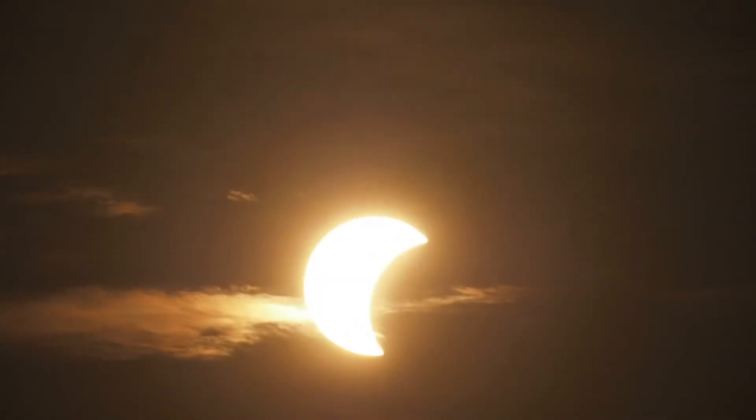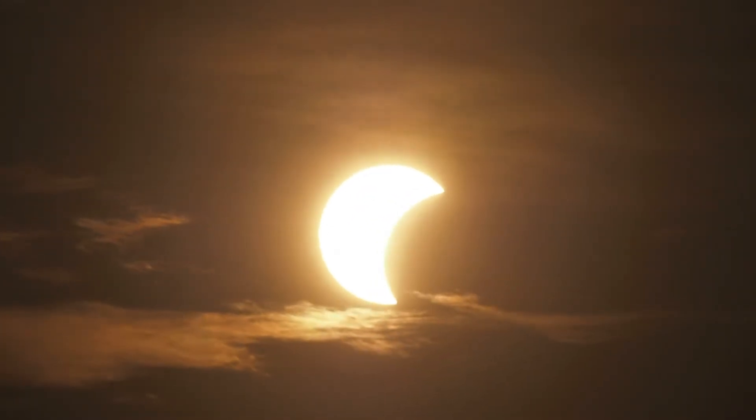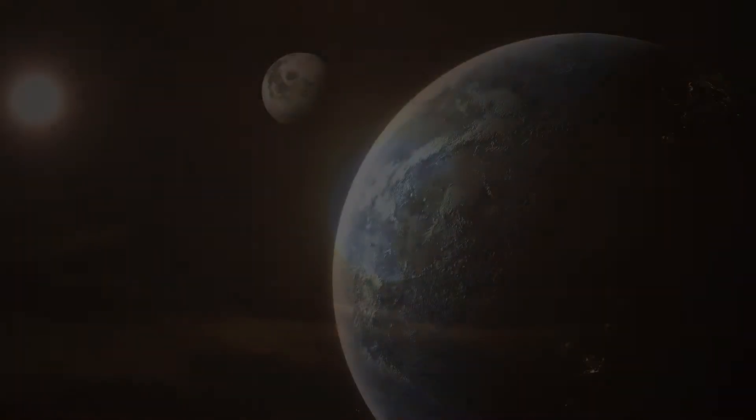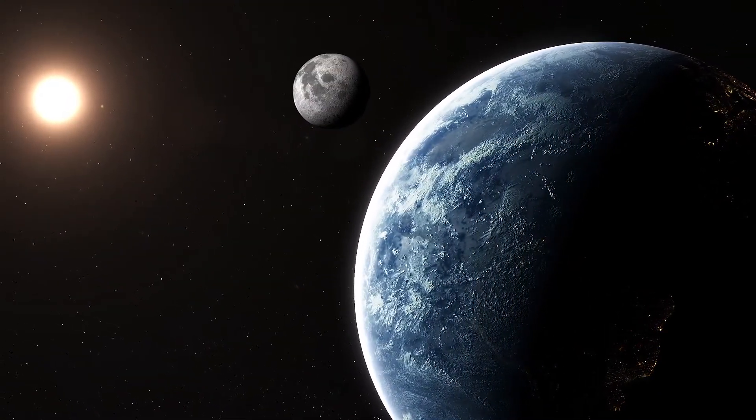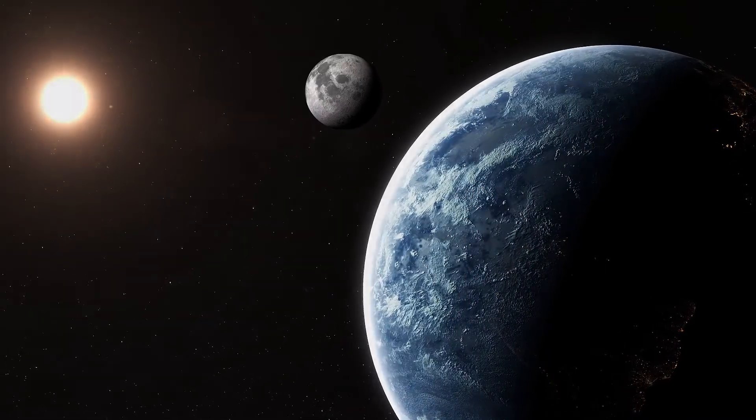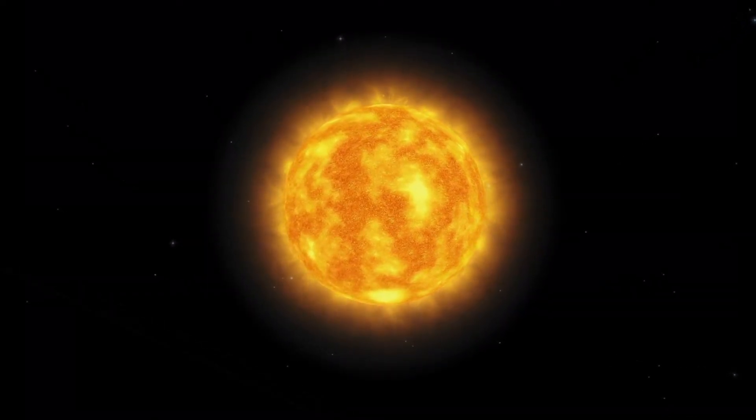To understand what a solar eclipse is and why it occurs, we first need to consider some of the details of the Sun-Earth-Moon system. Let's begin by looking at the size of each of these celestial bodies. The Sun, our star, located at the center of our solar system...